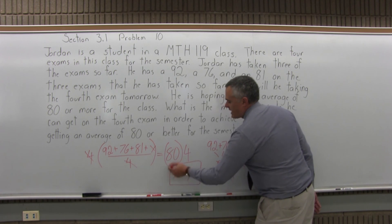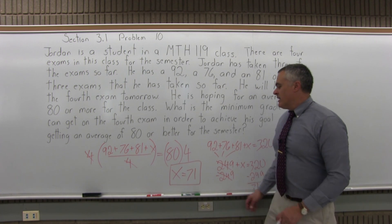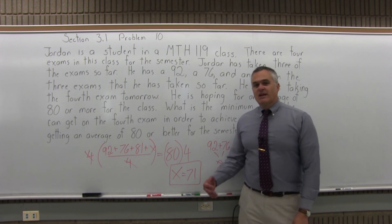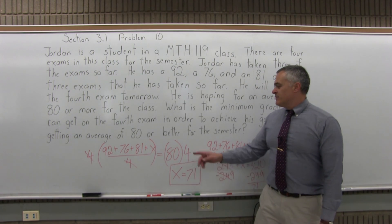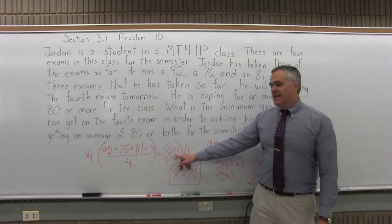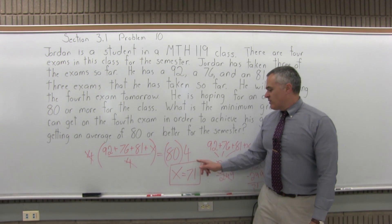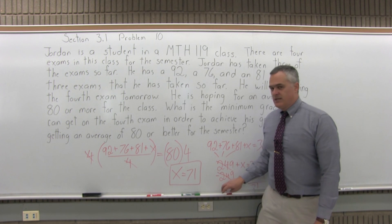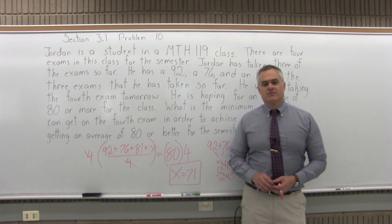So 71 is the magic number he needs to shoot for. If Jordan gets a 71 or better on that fourth exam, he'll have his 80 average or better. So 71 or better is what he needs on the last exam to get his B.